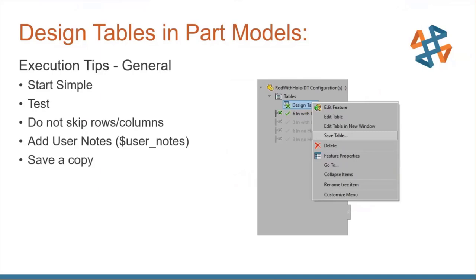Save a copy of your design table. That Excel spreadsheet exists inside the SolidWorks part or assembly — you don't want anything bad to happen to it. Right-click and choose Save Table to extract it. Note that it won't be a linked table at that point; to link it you'd need to save it, delete the existing table, then add a new design table using the From File option. You can only have one design table per part model. This save is more for keeping a backup copy just in case.